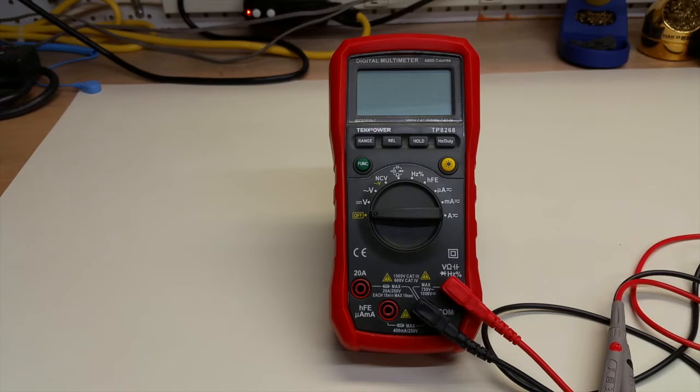The accuracy isn't anything to write home about, but you wouldn't expect that at this price range. The accuracy for DC volts, depending on the range, the highest accuracy is half a percent plus two least significant digits, and that's for millivolts up through 400 volts. For the 1000 volt range, the accuracy is eight-tenths of a percent plus two digits.